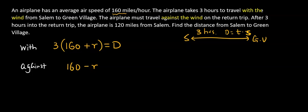After three hours into return trip means the airplane fly three hours. Cannot be equal d. Why? Because we're 120 miles from Salem. Which means it's distance minus 120.